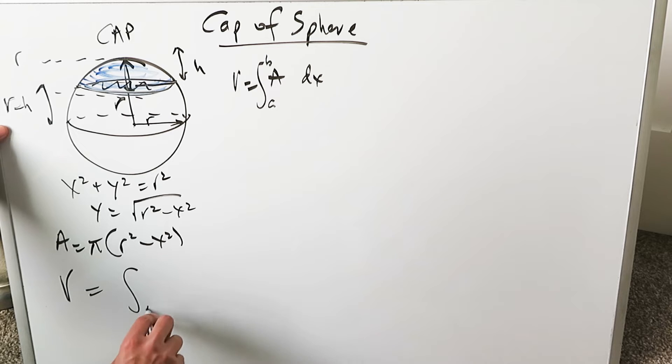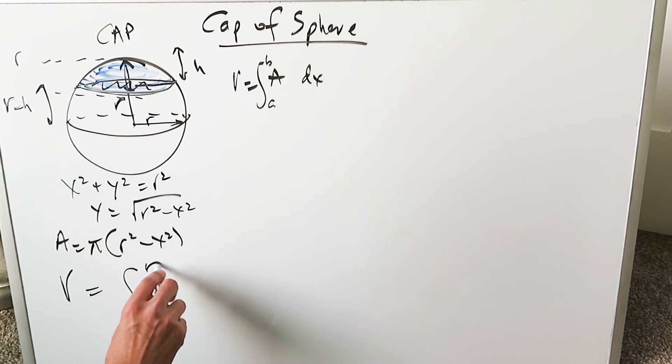What is that limit? R minus H going as high as R. You have a pi sitting outside and R squared minus x squared represents the integrand. You just have to integrate it and you'll have your answer, the volume of this cap.